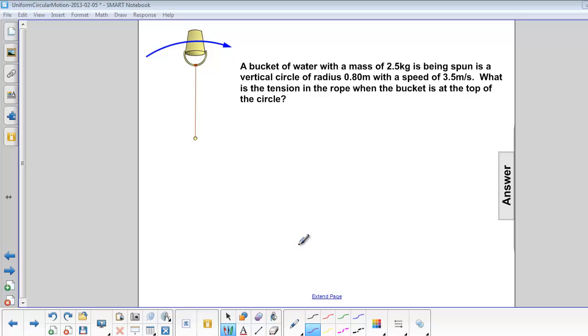A bucket of water with mass 2.5 kilograms is being spun in a vertical circle of radius 0.8 meters with a speed of 3.5 meters per second. What is the tension in the rope when the bucket is at the top of the circle?